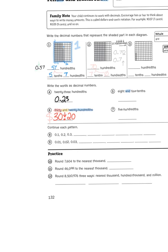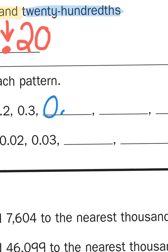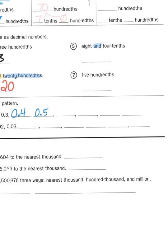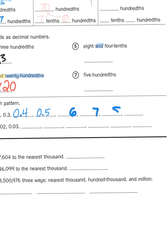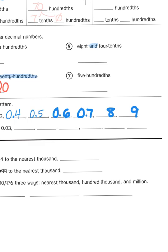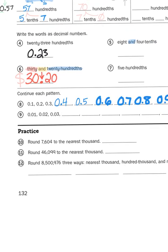For numbers 8 and 9, we are creating a number pattern. The pattern 0.1, 0.2, 0.3 continues: 0.4, 0.5, 0.6, 0.7, 0.8, 0.9. We're dealing with tenths. Thinking about money, one tenth of a dollar is a dime, so we're just counting dimes: 10 cents, 20 cents, 30 cents, 40 cents, and so forth.